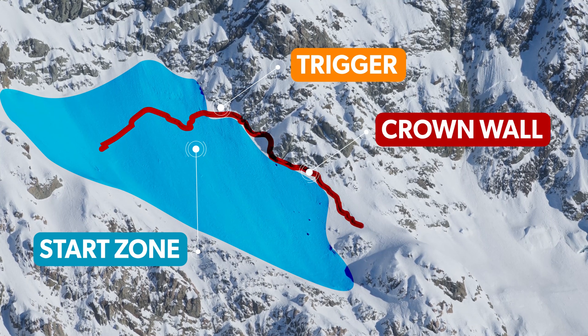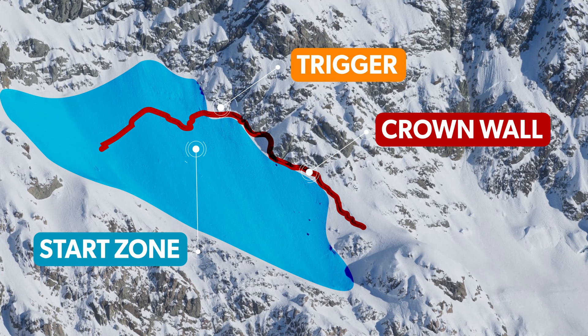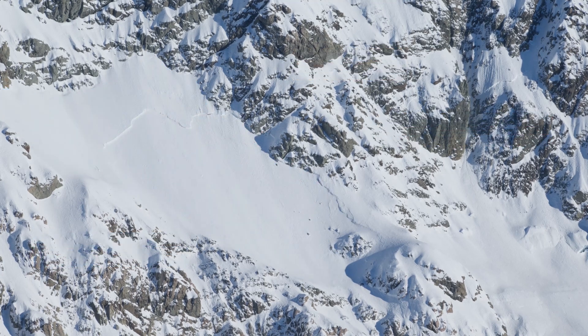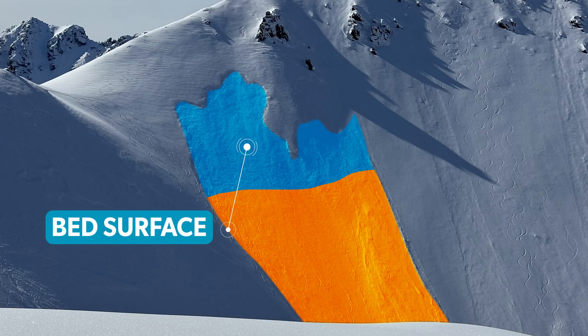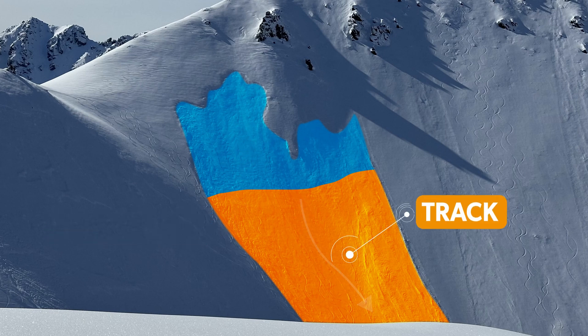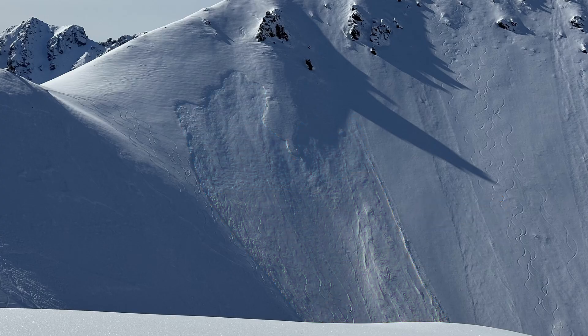Crown wall is the snow that is left behind after an avalanche. Bed surface is a layer of snow on top of which the avalanche runs on. The track is the terrain where the avalanche travels with the most speed.